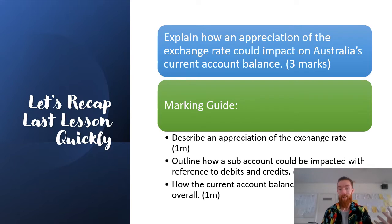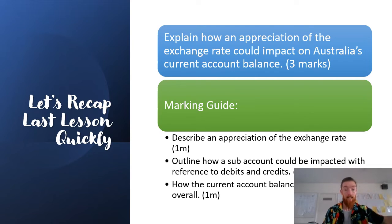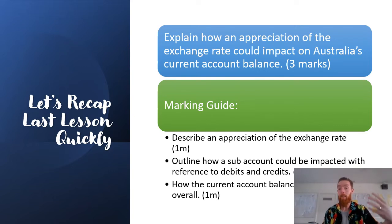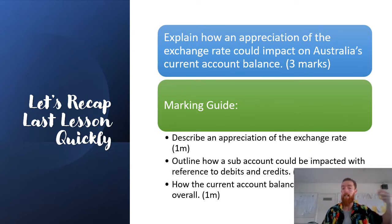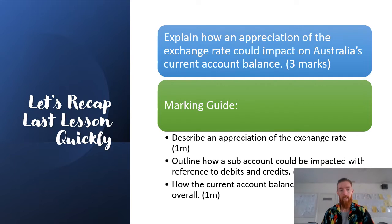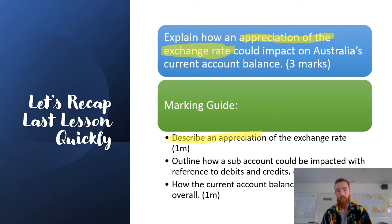Looking at a sample question: a lot of the time you get a factor and are asked how does that factor impact the current account balance. In this instance: 'Explain how an appreciation of the exchange rate could impact Australia's current account balance' for three marks. Your explaining questions in economics tend to be around three marks. You can break down the three marks relatively simply. First, always explain what the changing factor means — here, describe what an appreciation of the exchange rate actually is.